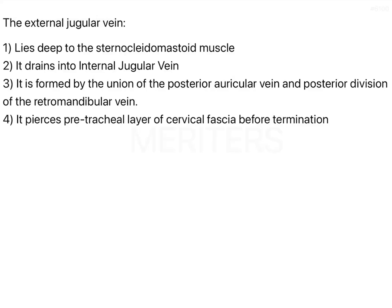The external jugular vein — the options are: it lies deep to the sternocleidomastoid muscle; it drains into the internal jugular vein; it is formed by the union of the posterior auricular vein and posterior division of the retromandibular vein; and it pierces the pre-tracheal layer of cervical fascia before termination.